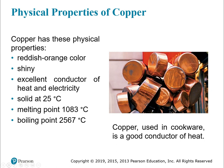So the physical properties of copper — to put that into context — it's got a reddish-orange color. You'll see a lot of cookware using copper, and now the trend is copper-finished kitchen gadgets. It's shiny, metals are shiny, a great conductor of heat and electricity, it's a solid, and it's got really high melting and boiling points because it's a metal. Those are the physical properties of copper.